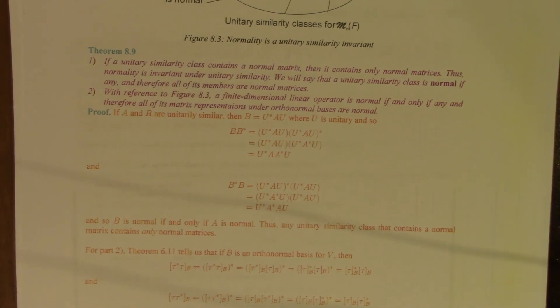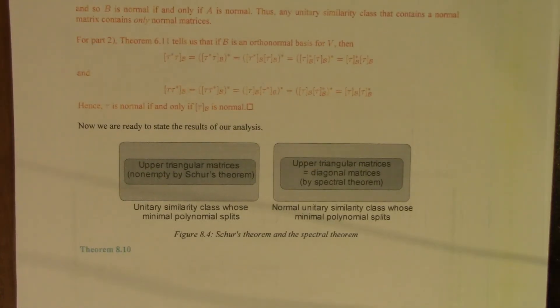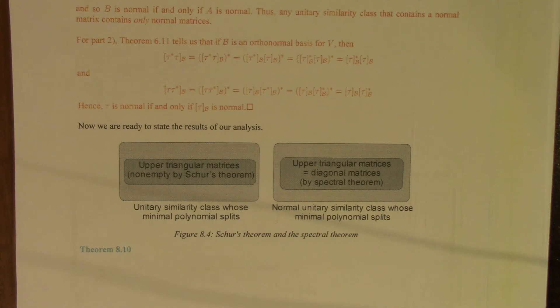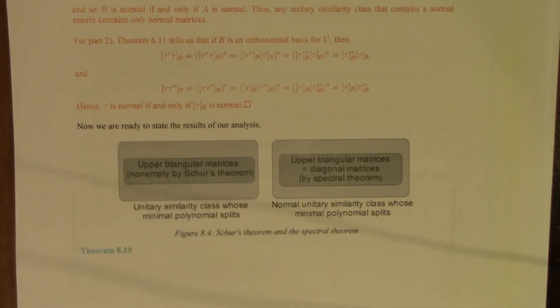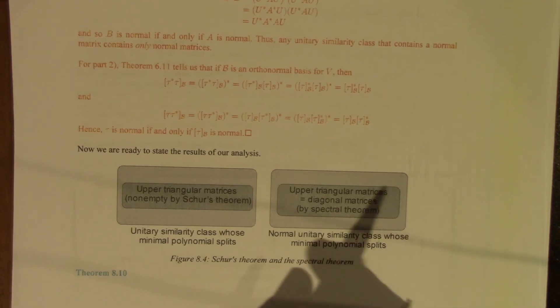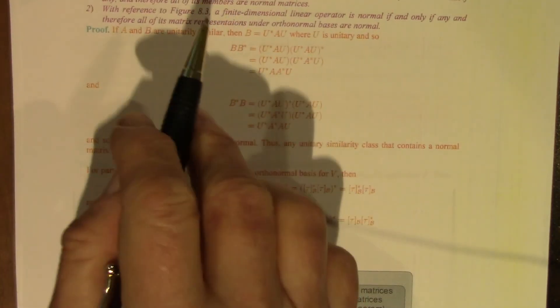And then we make the connection: tau is normal if and only if its matrix representations are normal. So we've done a bit of analysis. What we have shown is that an upper triangular matrix that is normal has to be diagonal. The converse is pretty obvious — a diagonal matrix is normal. Normality is invariant under unitary similarity.